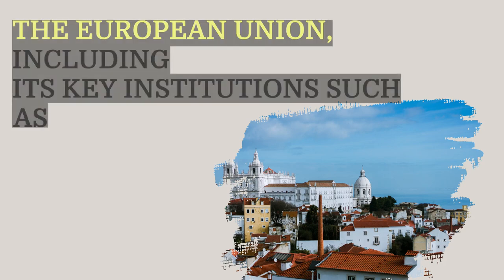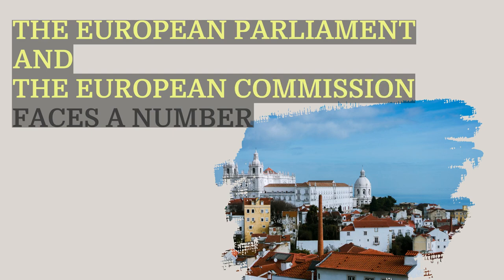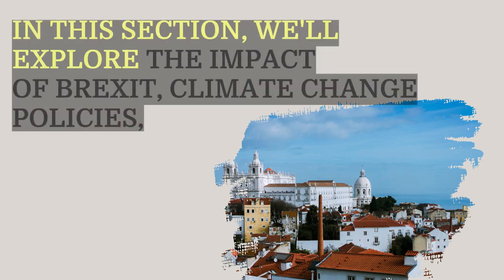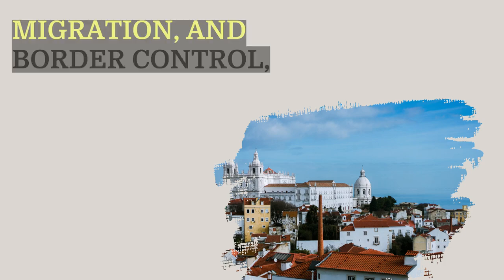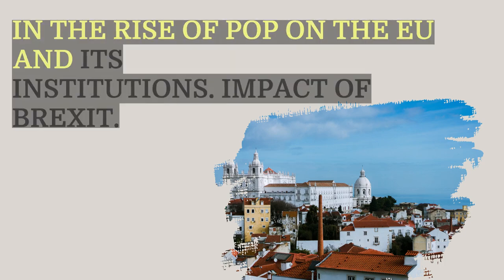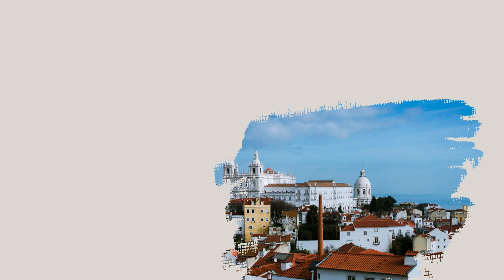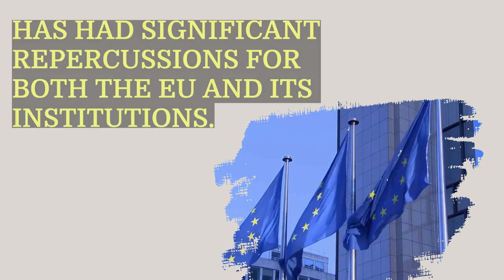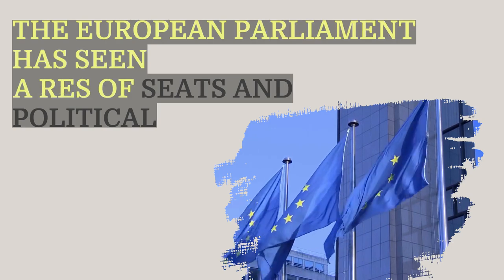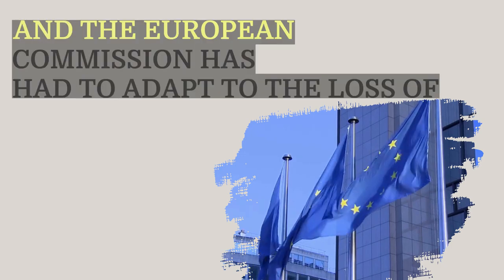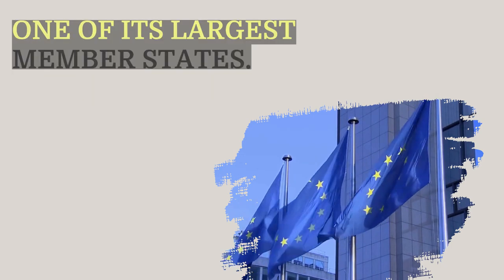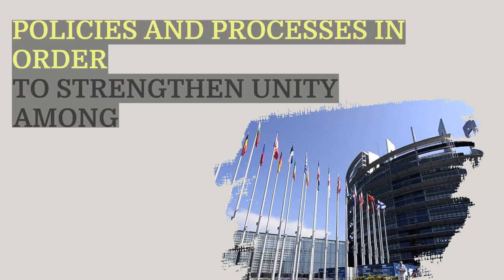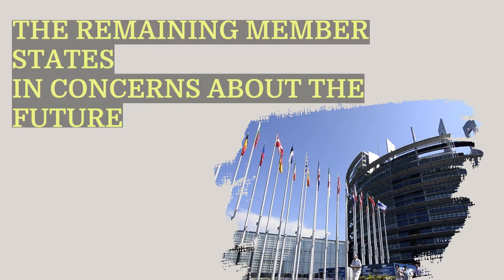The European Union, including its key institutions such as the European Parliament and the European Commission, faces a number of challenges and opportunities in today's rapidly changing world. Brexit — the United Kingdom's departure from the European Union — has had significant repercussions for both the EU and its institutions. The European Parliament saw a reshuffling of seats and political groups due to the withdrawal of British MEPs, and the European Commission had to adapt to the loss of one of its largest member states. Brexit has also prompted the EU to re-evaluate its internal policies and processes in order to strengthen unity among the remaining member states.